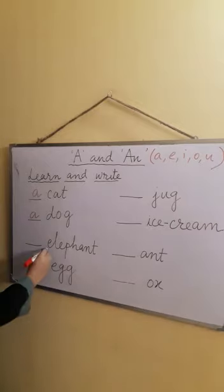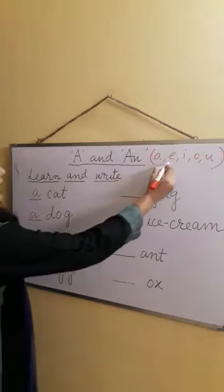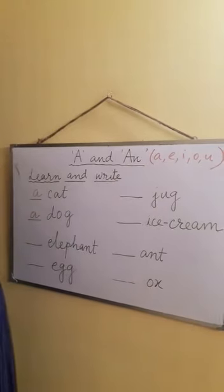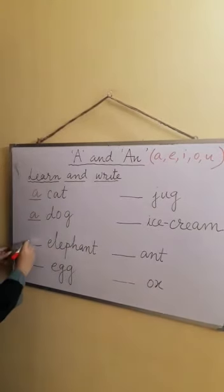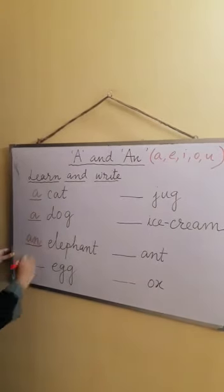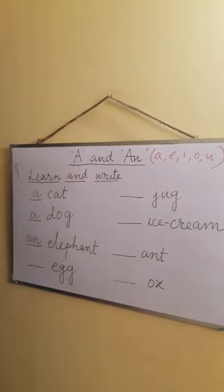Elephant. E. Yes, E is a vowel. So if there is a vowel we write An. An elephant.